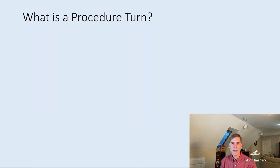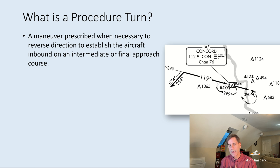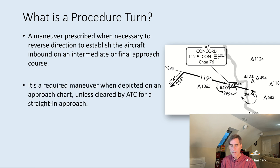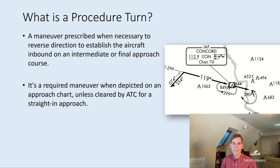So what is a procedure turn? It's a maneuver prescribed when necessary to reverse direction to establish the aircraft inbound on an intermediate or final approach course. It's a required maneuver when depicted on an approach chart, unless ATC has cleared you for a straight-in approach. If you see anything that's bold on the approach plate, that's a required part of the maneuver, and unless told otherwise by ATC, you're going to be flying it.